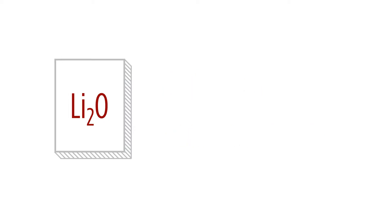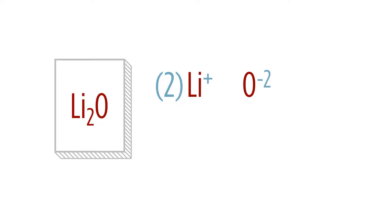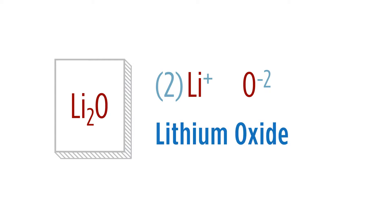Another compound: Li2O. Notice that we're putting the element that will be a cation first. Lithium is group 1A, so it has a positive charge. Oxygen is in group 6A, so adding two electrons gives it a negative 2 charge to reach noble gas configuration. This gives us lithium oxide — for the anion, we change the suffix to -ide.